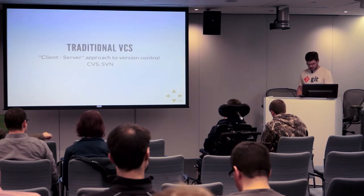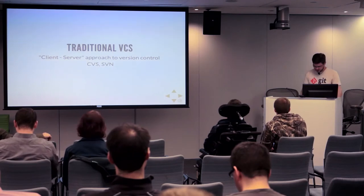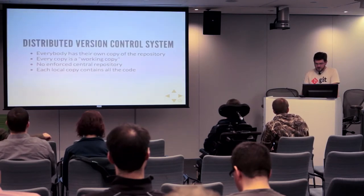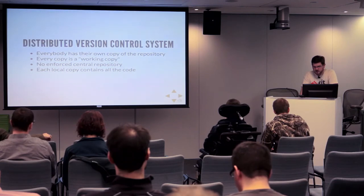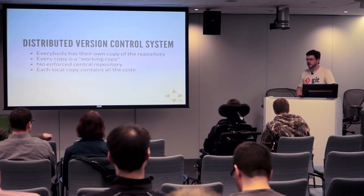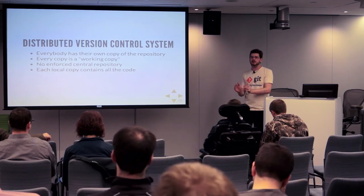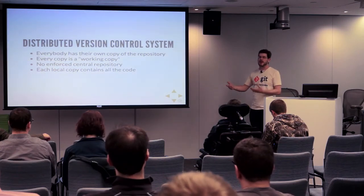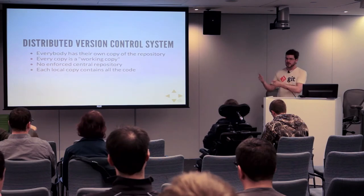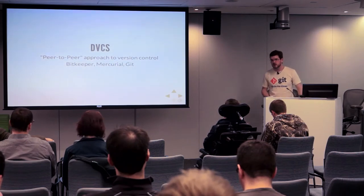Traditional version control systems were a pretty centralized affair. You would check out the code you were going to work on, make your changes, check it back in. Early attempts at making it easier for large groups were around minimizing conflicts so you're not working on the same file as someone else at the same time. There were popular tools like CVS — SVN is actually what WordPress uses. Eventually these tools began to feel limiting for people running large-scale distributed projects. The concept of distributed version control arose in the mid-to-late 90s.